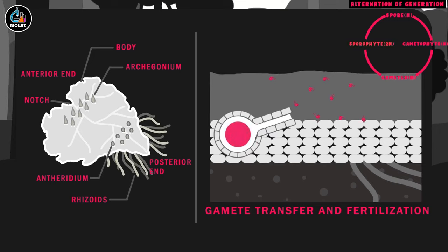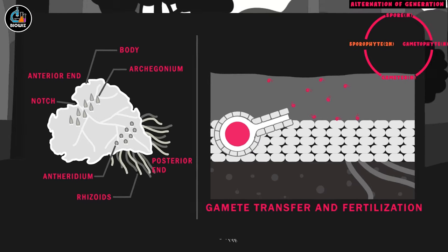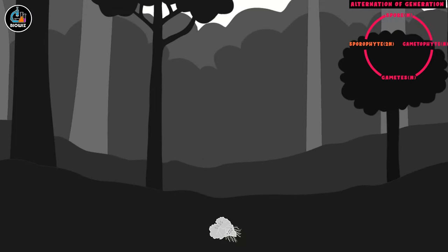The zygote marks the beginning of the diploid phase. The zygote now divides by mitosis, resulting in formation of embryo, which matures into the diploid and the main plant body, called sporophyte.